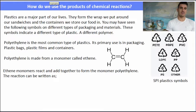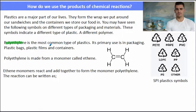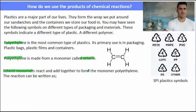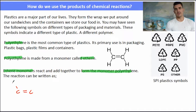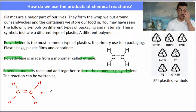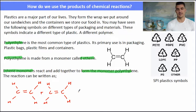Polymers are essentially plastics and they're all around us. A few of the different types of plastics you've probably seen are on the right-hand side. Polyethylene is a very common type of plastic used in a number of different packaging materials. Polyethylene is made from a monomer called ethene. The way we would write the formation of polyethylene is by starting with two ethene monomers, adding those together, and then forming our polymer, which is called polyethylene.